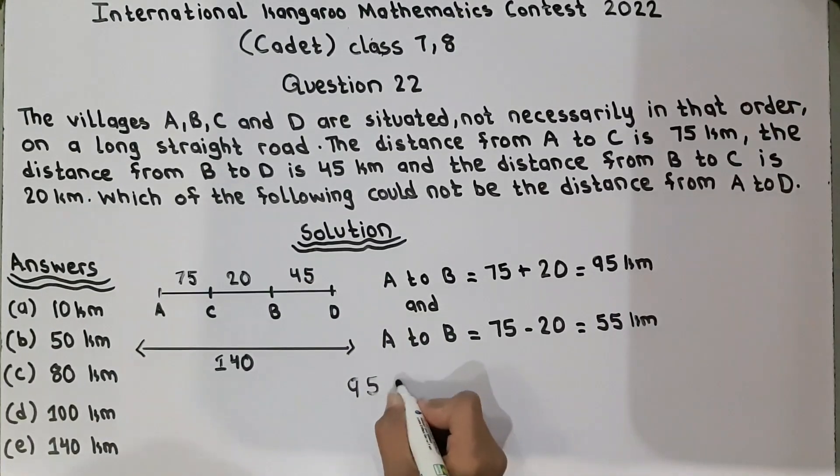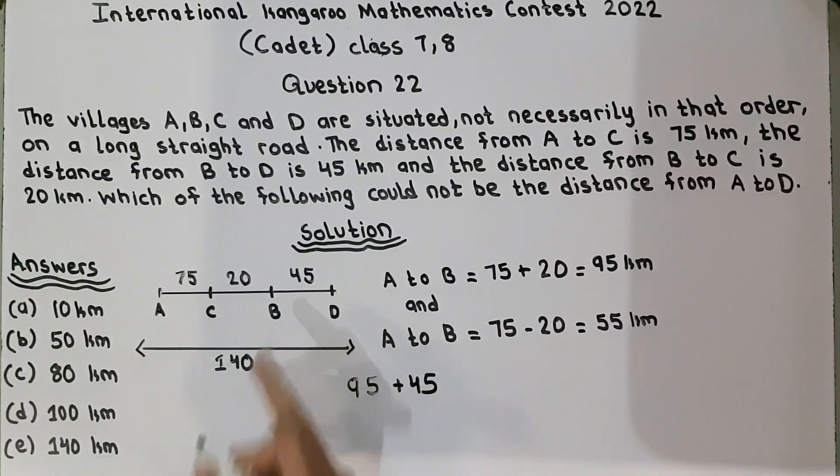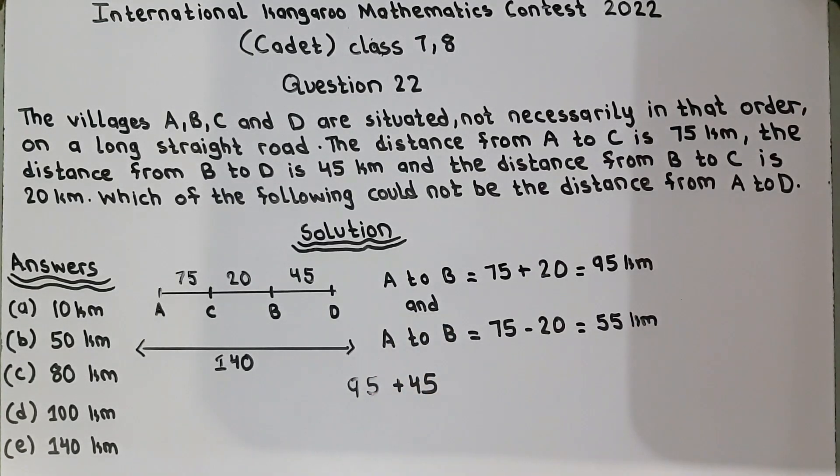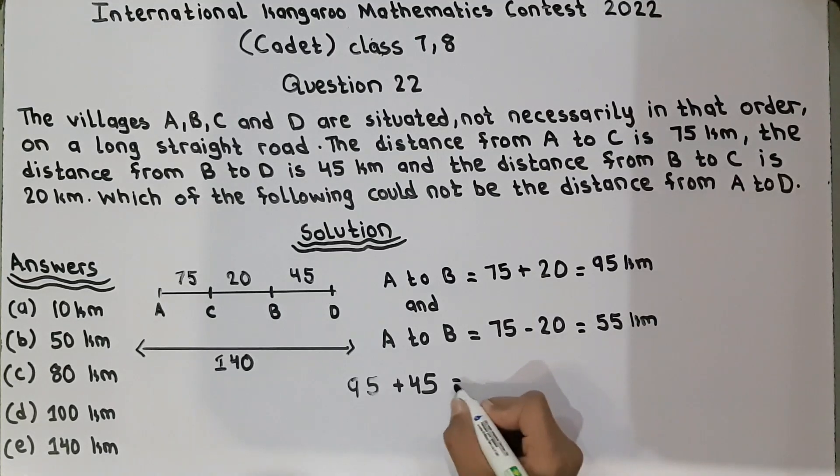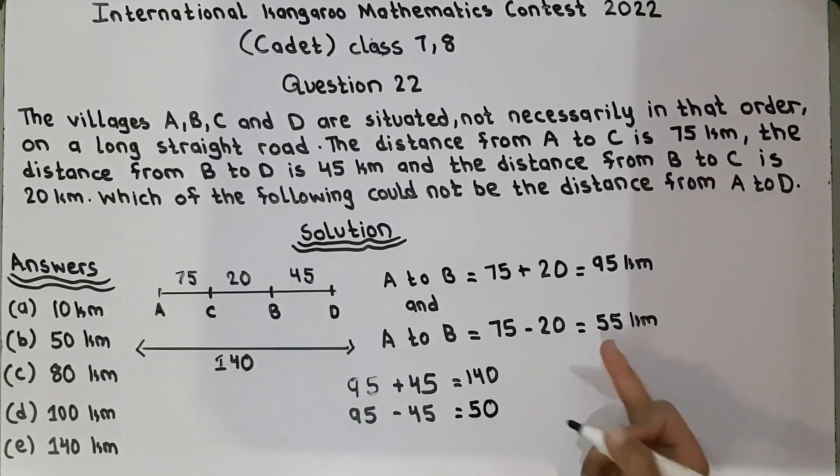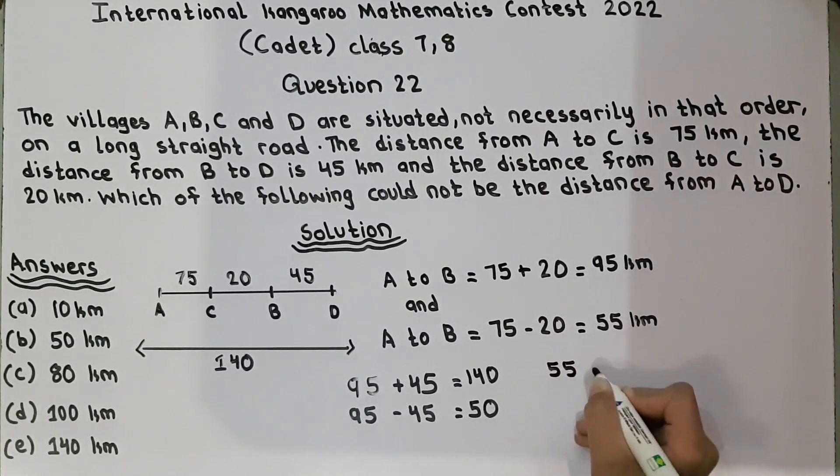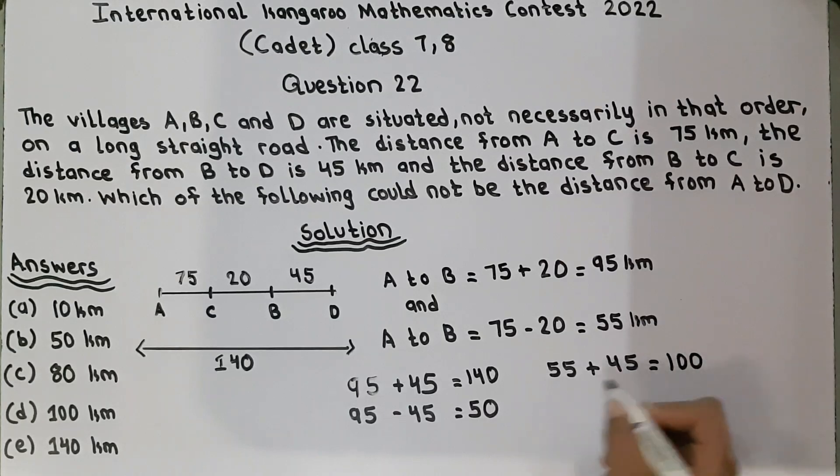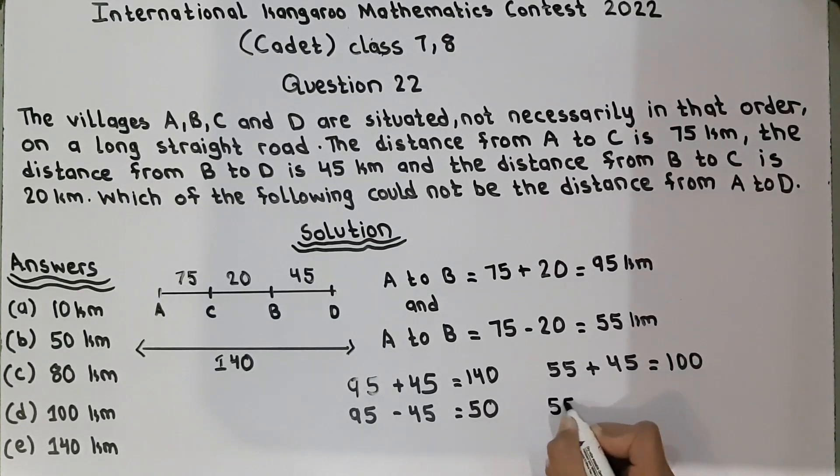We will use this twice. 95 plus 45 because we have to find the distance from A to D. We have to find the distance from A to B, then B to D. 95 plus 45 is equal to 140 and 95 minus 45 is equal to 50. And same for this 55. 55 plus 45 is equal to 100 and 55 minus 45 is equal to 10.